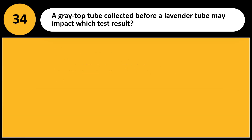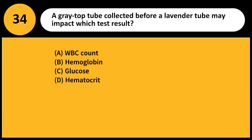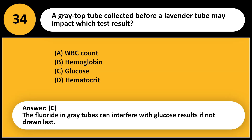A gray top tube collected before a lavender tube may impact which test result? A. WBC count. B. Hemoglobin. C. Glucose. D. Hematocrit. Answer: C. The fluoride in gray tubes can interfere with glucose results if not drawn last.